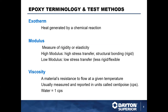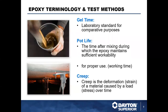Some key terms: exotherm is the heat generated by the chemical reaction. Modulus is the measure of rigidity and elasticity — a high modulus offers stress transfer for rigid structural bonding, while a low modulus means less rigidity and more flexibility. Viscosity is the material's resistance to flow at a given temperature, measured in centipoise — water equals one centipoise. Gel time is the laboratory standard for comparative purposes. Pot life is the working time available after mixing the product.